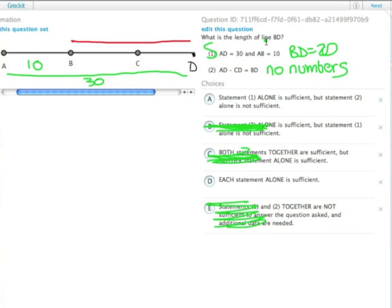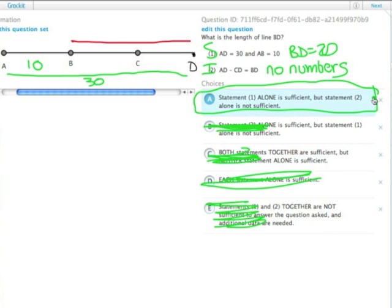Without numbers, we can't get the length of line BD, and therefore this is insufficient. So it can't be each on its own, and is in fact just statement one.